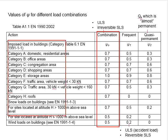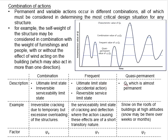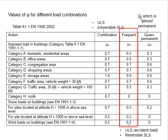The frequent type refers to ultimate limit states, particularly for accidental actions, and also the reversible serviceability limit state — for example, actions causing cracking and deflection over short durations. The relevant factor of safety is denoted as ψ₁, as given in the table here.